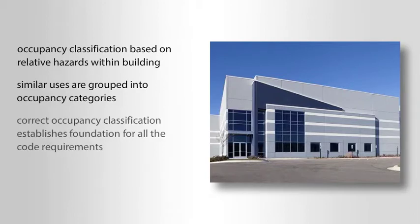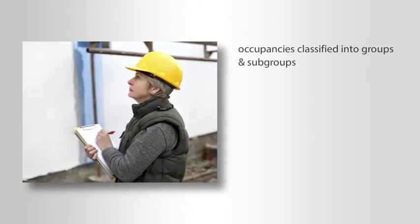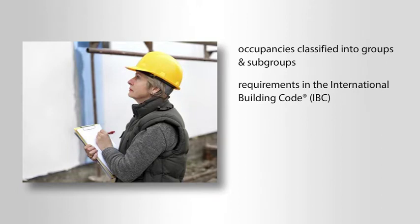A correct occupancy classification establishes the foundation for all the code requirements that are intended for the building's safe use. Occupancies are classified into groups and subgroups using the requirements in the International Building Code, or IBC.